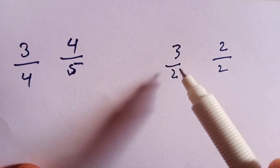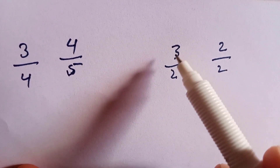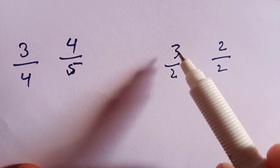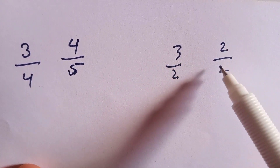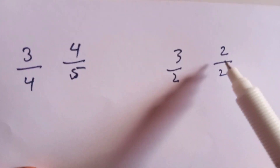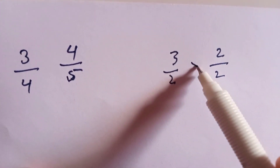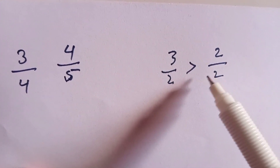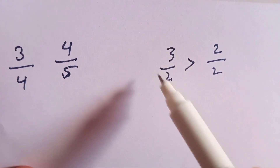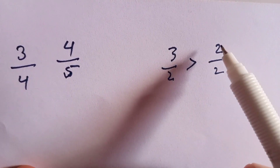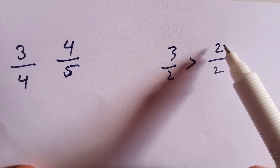The fraction depends on the numerator, so 3 over 2 is greater than 2 over 2. We say that 3 over 2 is greater than 2 over 2 because the numerator of 3 over 2 is greater than the numerator of 2 over 2.